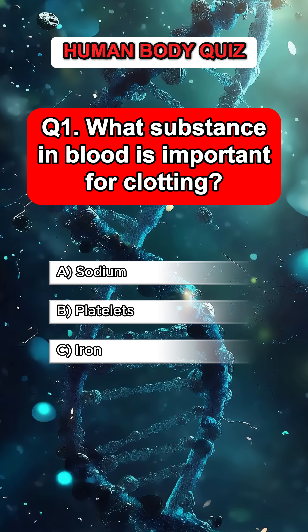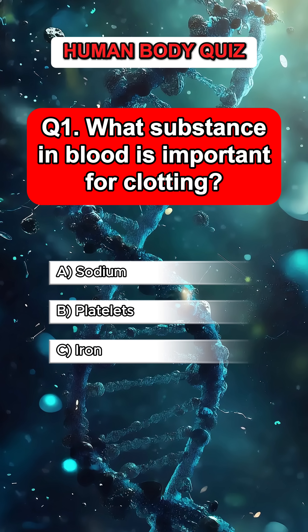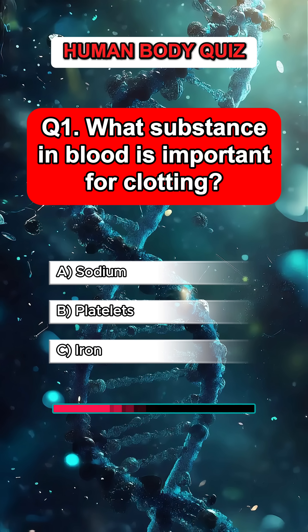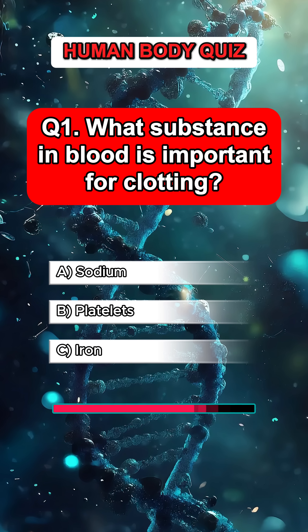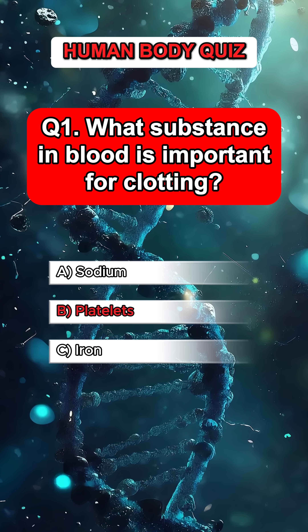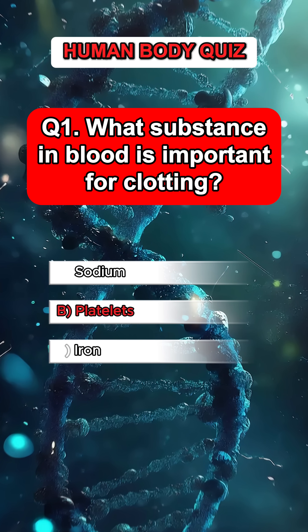Question 1. What substance in blood is important for clotting? Answer B. Platelets.